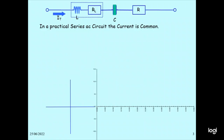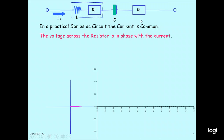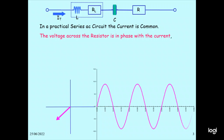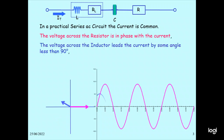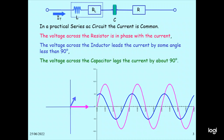This is the typical practical series RLC circuit. The electric current flows through it. This is the inductor and this is the resistor and capacitor. The voltage across the resistor is in phase with the current. The voltage across the inductor leads the current by some angle less than 90 degrees. And the voltage across the capacitor lags the current by about 90 degrees.